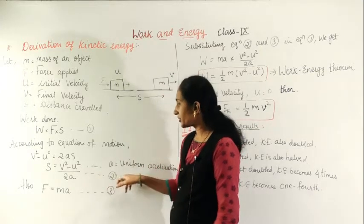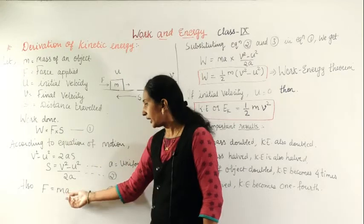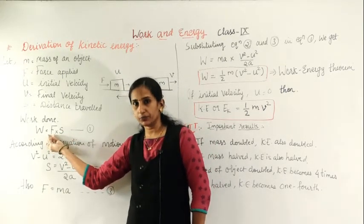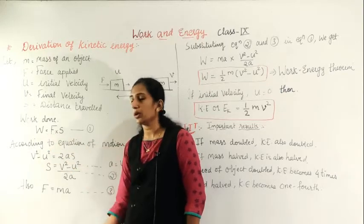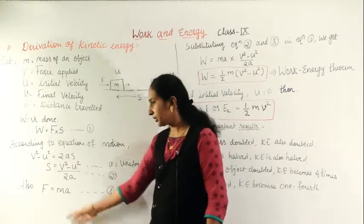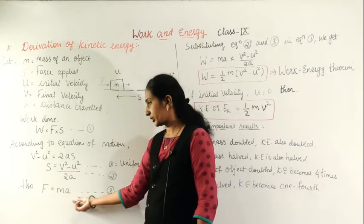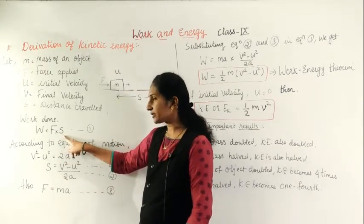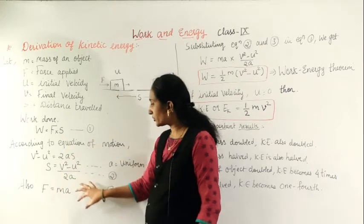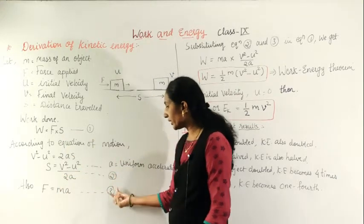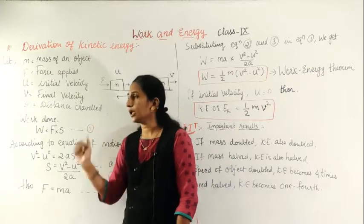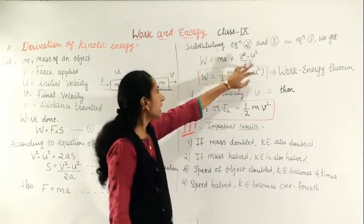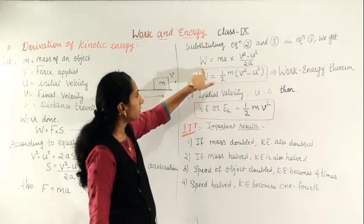That was equation number 2, and W = Fs is equation number 1. Now we find the value of F. From Newton's second law, which you have studied, force equals mass into acceleration: F = ma. This is equation number 3. We now have the value of F and the value of s, so we substitute equations 2 and 3 into equation 1.